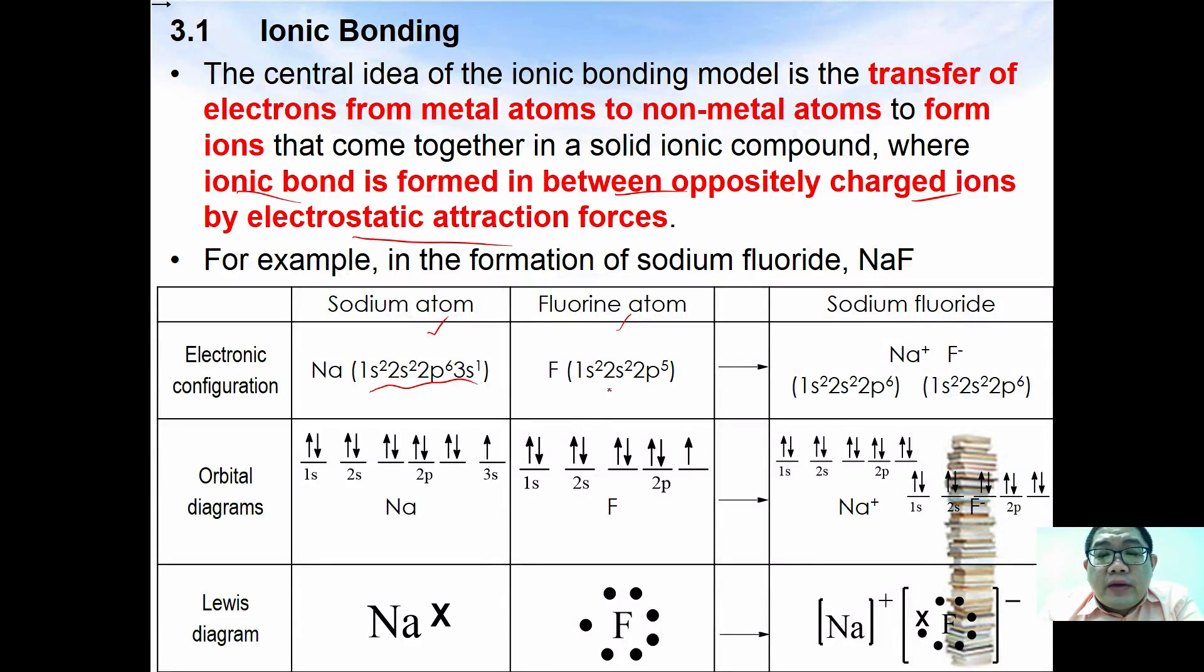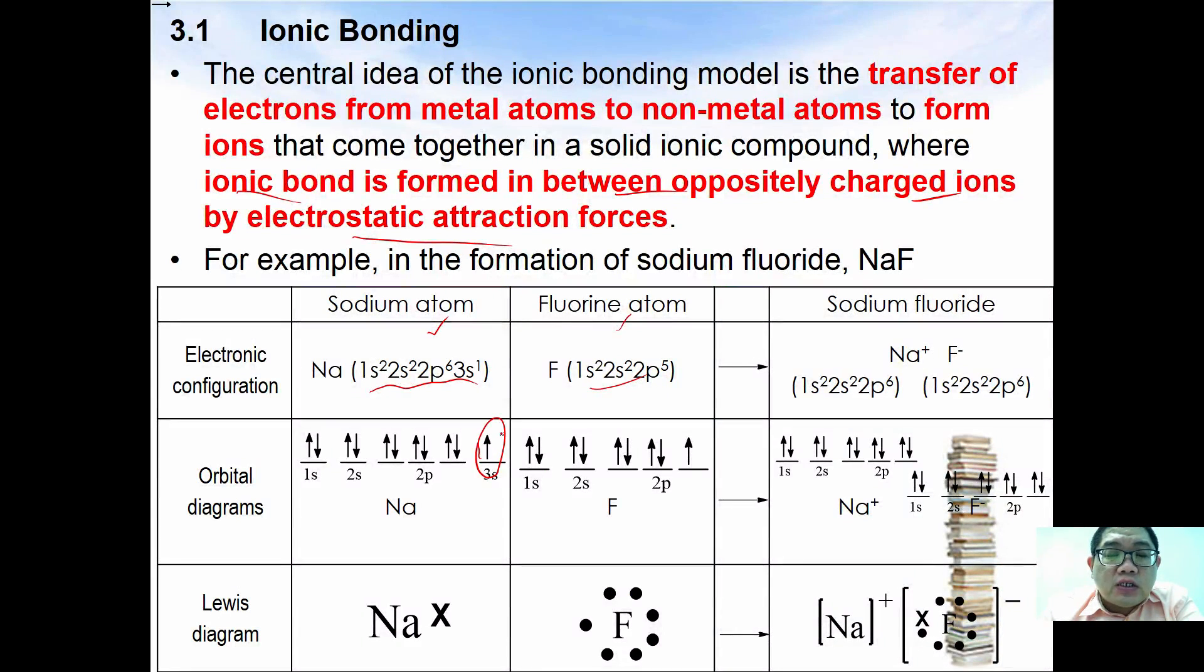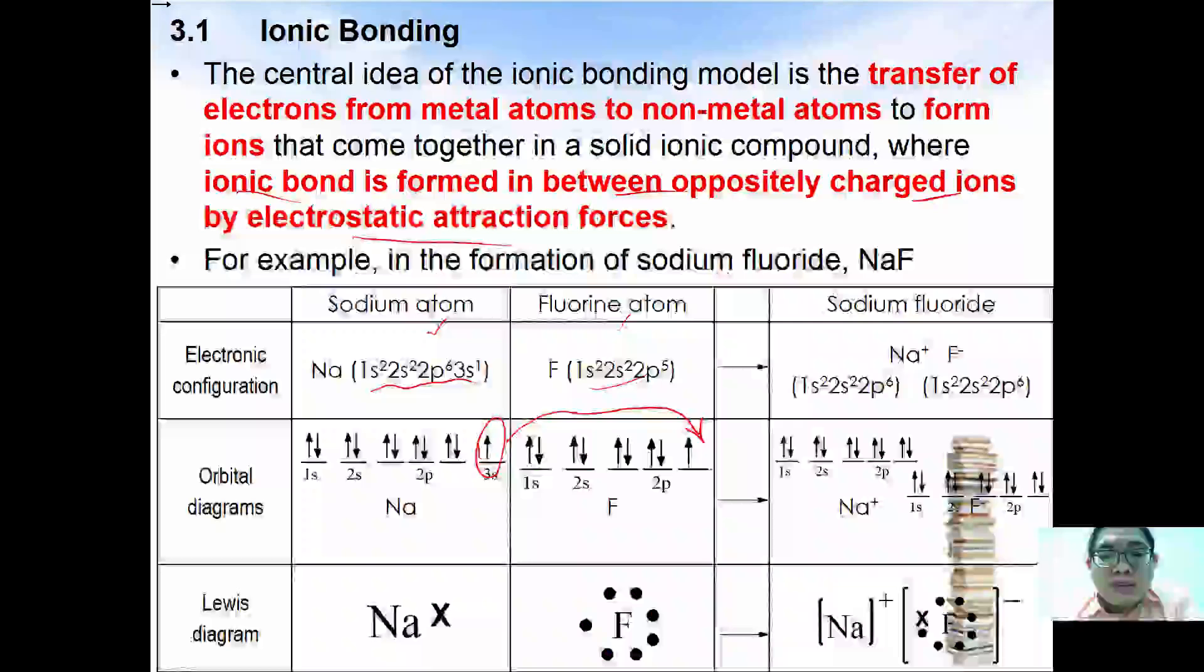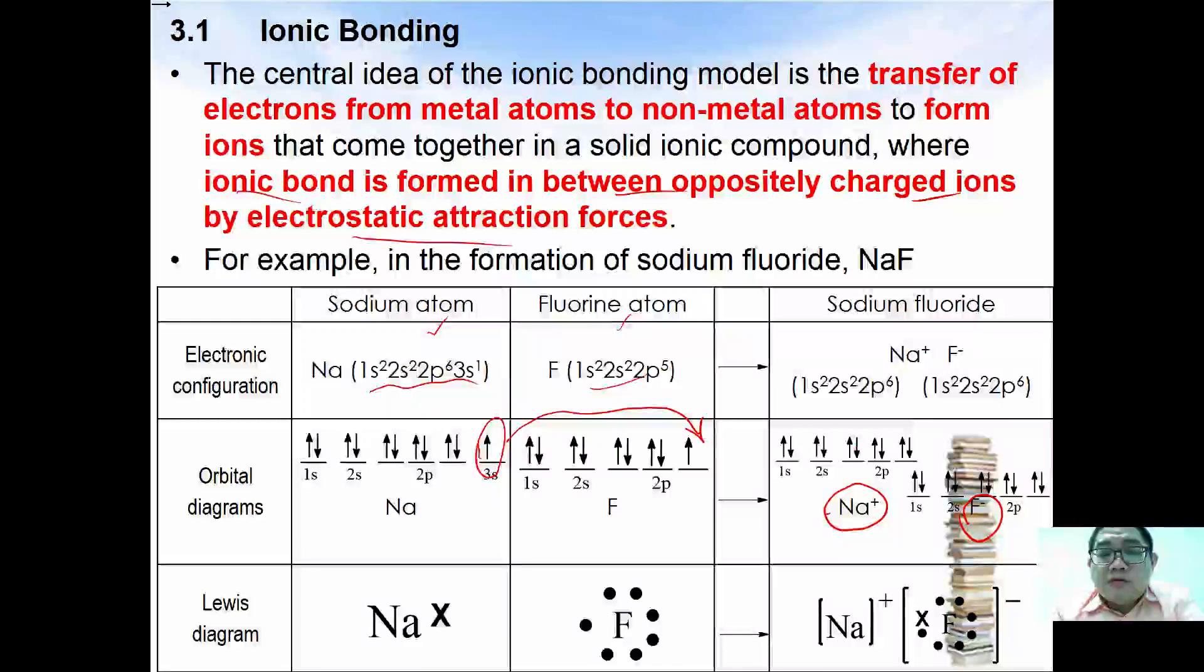When one electron from the 3s is transferred to the 2p of the fluorine, then cation will form from the sodium whereas fluorine will form fluoride ion. This will make both sodium ion and fluoride ion achieve an octet arrangement of 2s² 2p⁶.